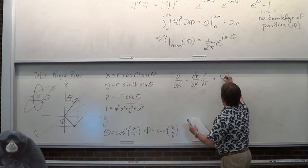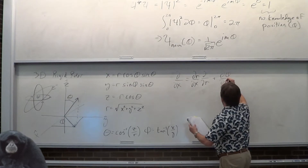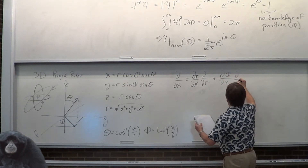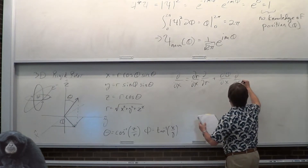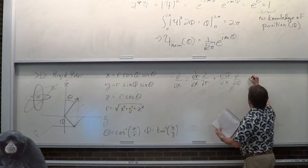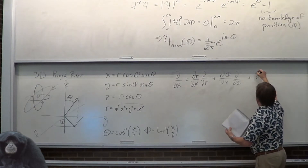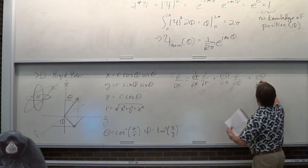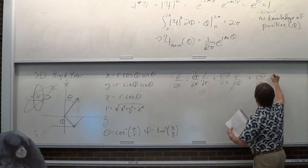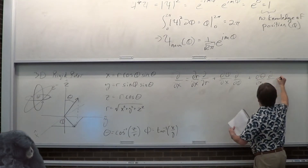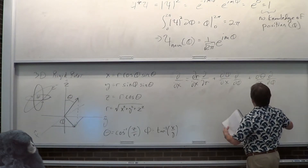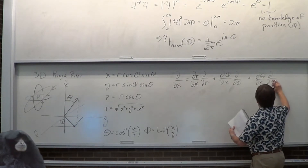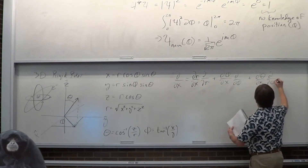Then you apply the chain rule to phi and theta: d/dθ with respect to x, and the theta terms.